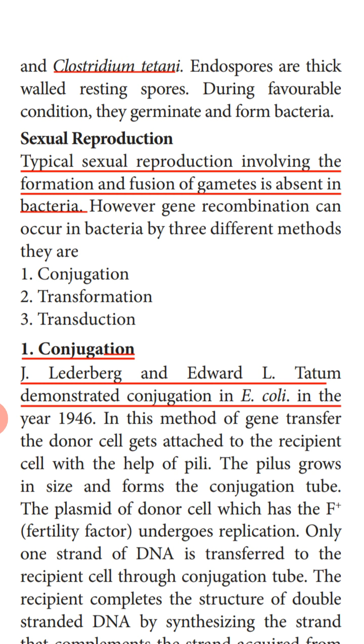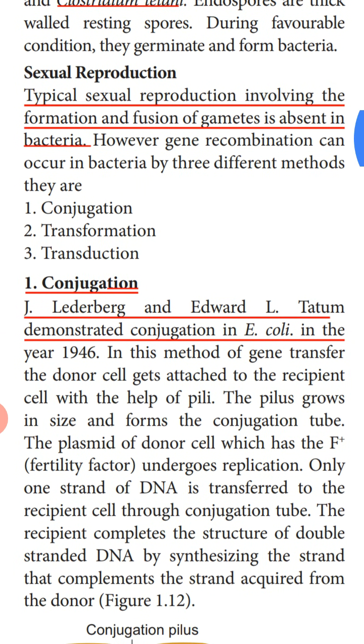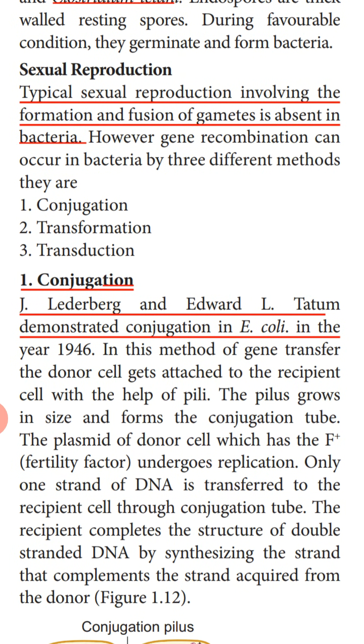Gene recombination can occur in bacteria by three different methods: the first method is conjugation, the second is transformation, and the third is transduction.